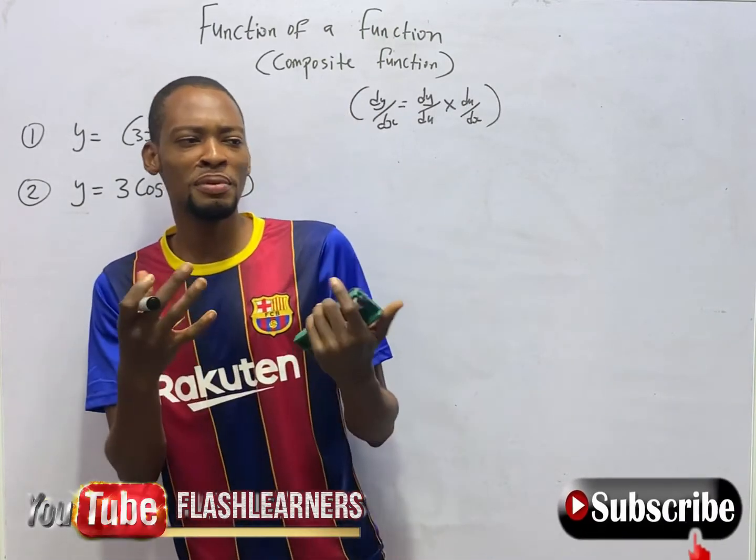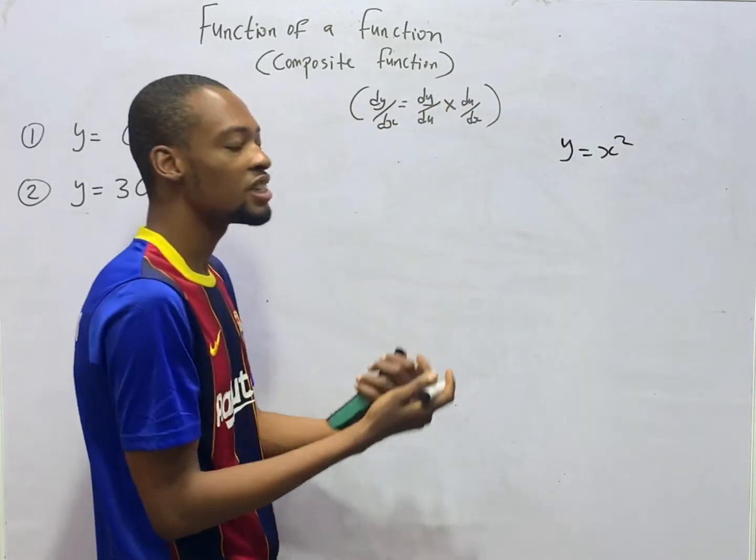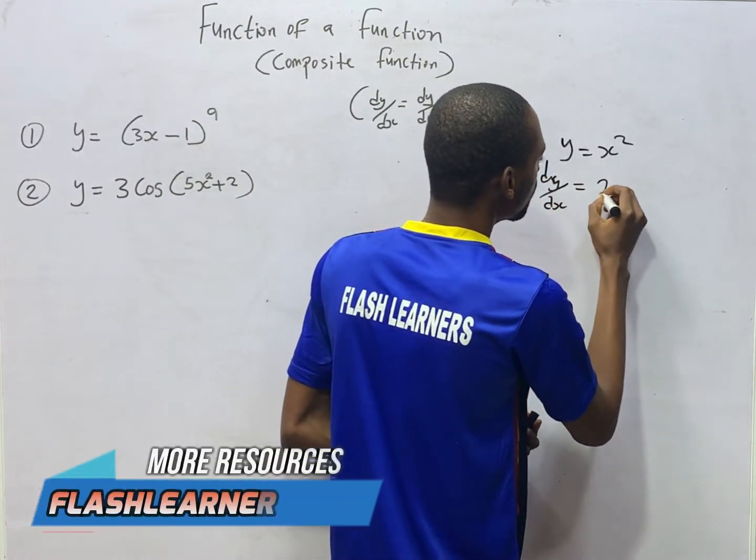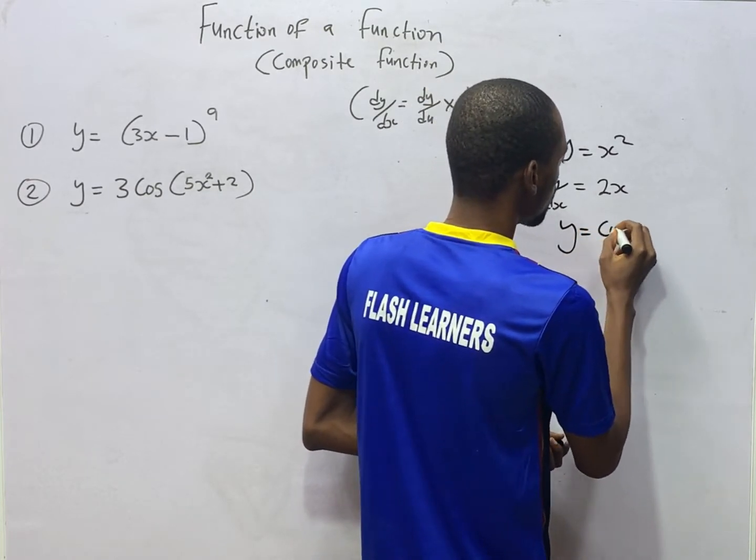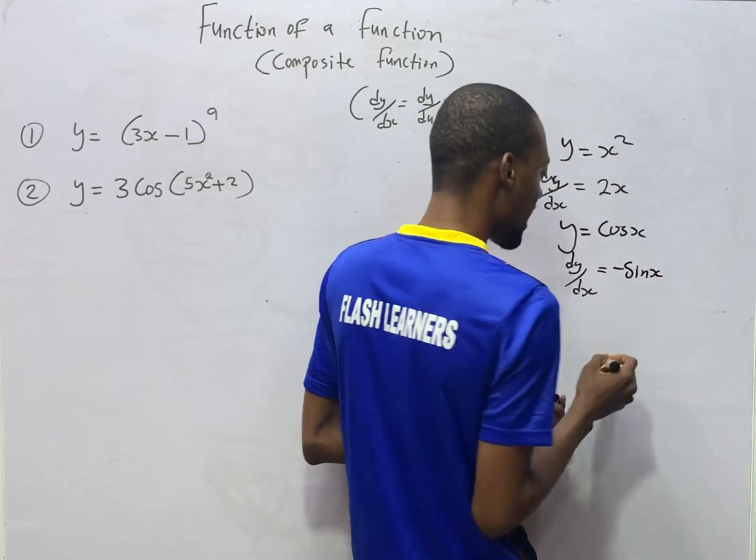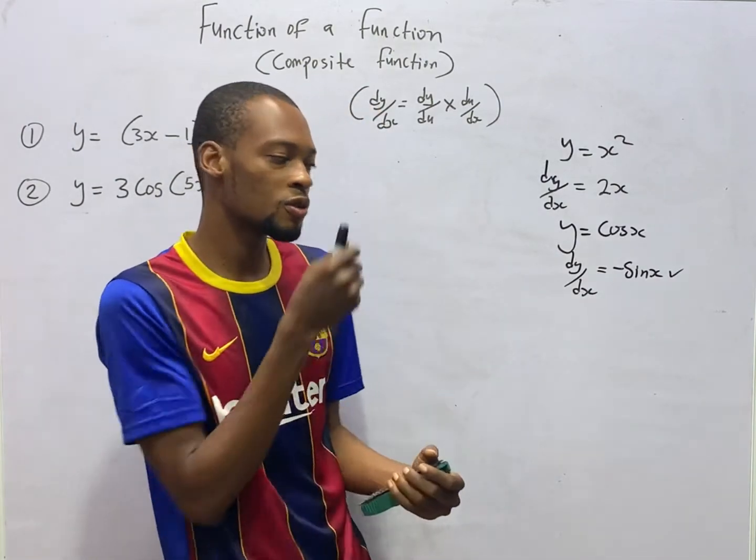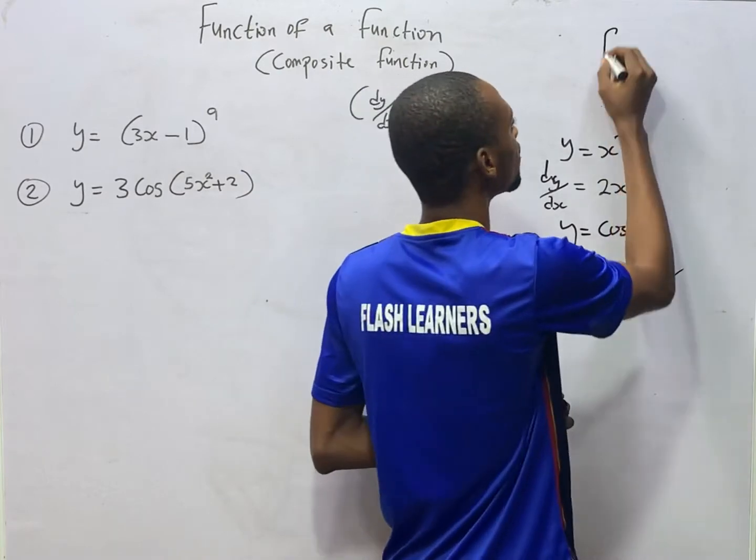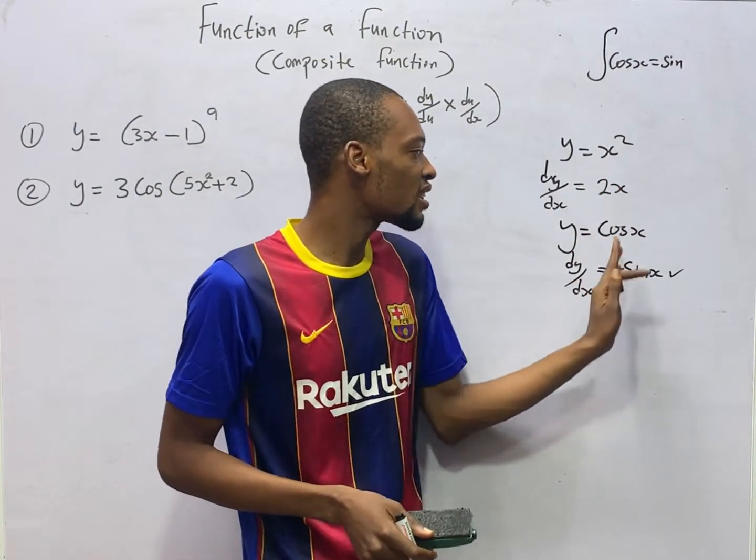Look at this. If you've been following my calculus videos, remember I told you that if y equals x squared, and I say differentiate with respect to x, dy/dx is simply equals 2x. If I say y equals cos x, dy/dx equals minus sin x. When you differentiate cos, you get minus sin. When you differentiate sin, you get cos. And remember, integration is the converse of differentiation, in the sense that when you integrate cos x, you get sin x. So these are all functions.